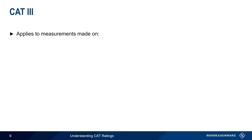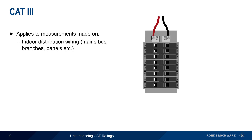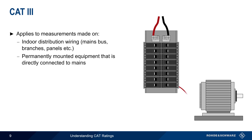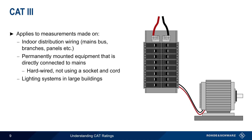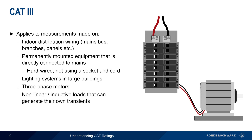CAT 3 applies to measurements made on indoor distribution circuits, such as on the mains bus, branches, panels, etc. This category also applies to permanently mounted equipment that's directly connected to mains — that is, equipment that's hardwired, not plugged in using a socket and power cord, as we saw for CAT 2. Additional examples of CAT 3 measurement environments include lighting systems in large buildings, three-phase motors, and any nonlinear or inductive loads which can generate their own transients.